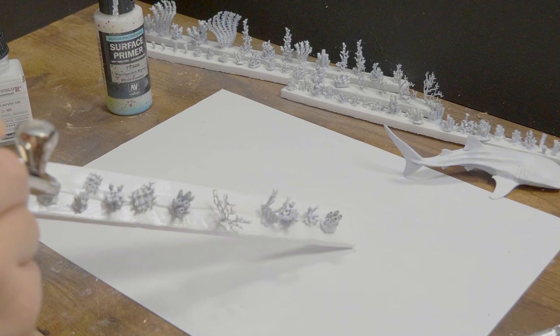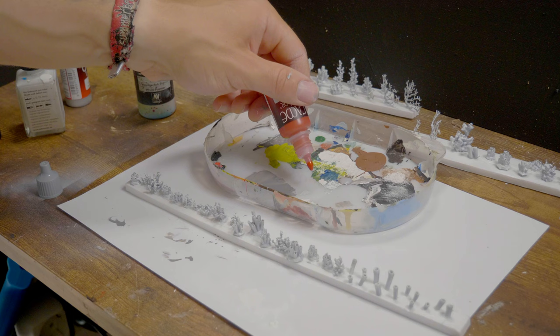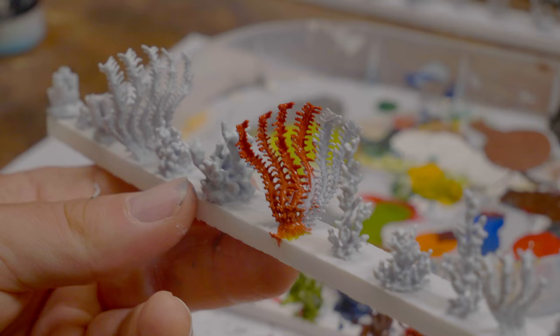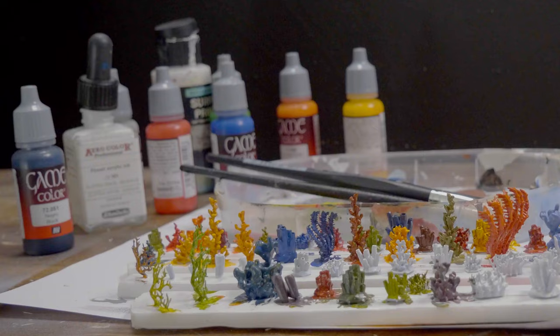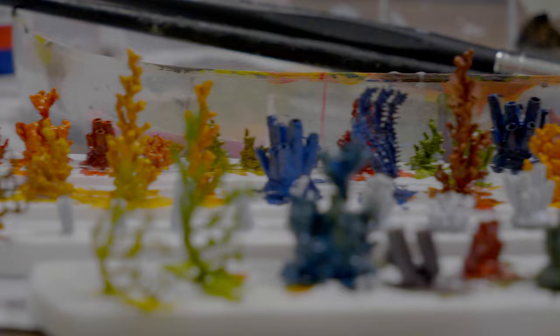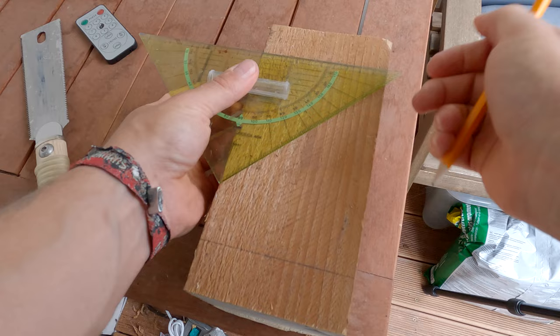So let's get started. With my 3D printer I've printed various corals, glued them for better handling on some styrofoam and then primed them with the airbrush. Corals are usually very colorful. As you can see I've therefore used pretty much everything in colors that I could find.